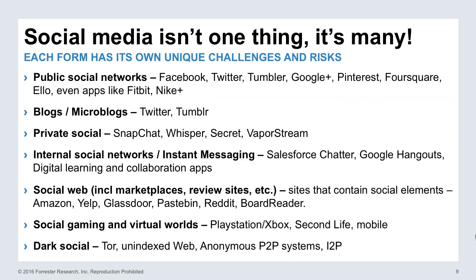Social media isn't just the public social networks like Facebook, Twitter, Tumblr, and Google+. There are very distinct differences between each one. When you think about a public social network versus a microblog, Facebook and Twitter don't seem that different — but some parts are actually very unique. Facebook acts as a form of digital identity since you can only have one account, whereas Twitter allows several accounts without requiring real-name identification — just an email address.